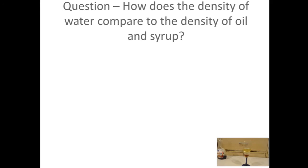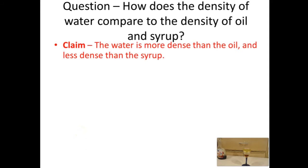So now let's talk about our results. The question we want to answer as a result of our experiment is: how does the density of the water compare to the density of the oil and the corn syrup? That's our question — that's what our experiment is trying to prove. So first, we have our claim, our one-sentence claim. Based on what I see here, the water is more dense than the oil, but it's less dense than the syrup. That answers the original part of the experiment.